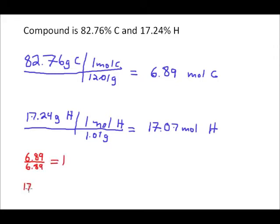Then we'll take the 17.07, divide that by 6.89. This works out to be 2.47. I'm going to round that off to 2.5. We need to remember that empirical formula means the lowest whole number ratio of elements present in a compound. 1 to 2.5 doesn't really meet that criteria. So I'm going to take both of these values and multiply them by 2.